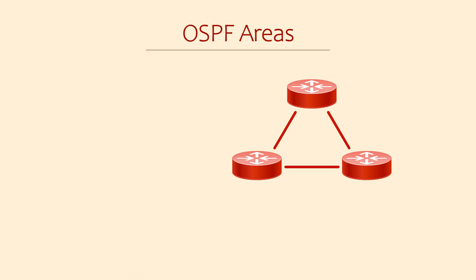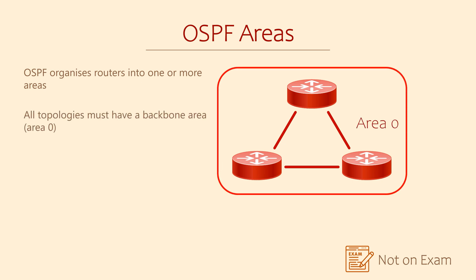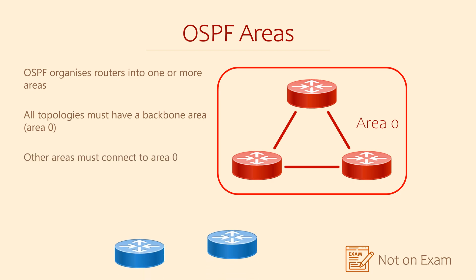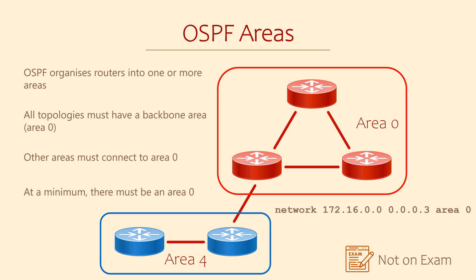OSPF is very good at organizing the network. It uses areas to group links and routers, which makes it possible to tune how OSPF works according to your needs. The CCNA exam doesn't test you on multiple areas, so you don't need to worry about this in much detail right now. What you do need to know is that all OSPF topologies must have at least one area — area 0, called the backbone. If we do have other areas they must connect to area 0 somehow, but it is quite acceptable to have only area 0 in the entire network.